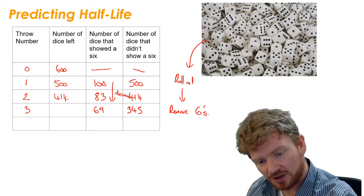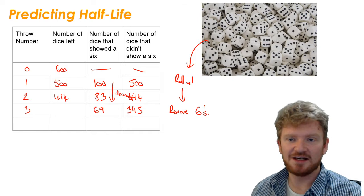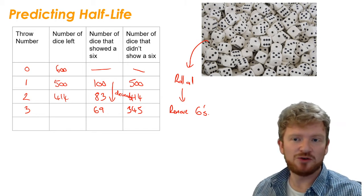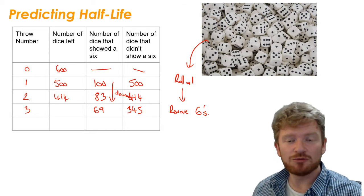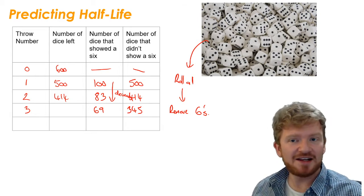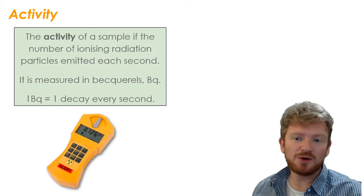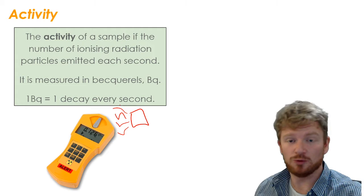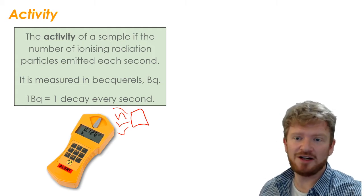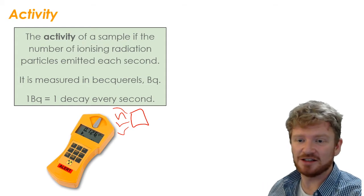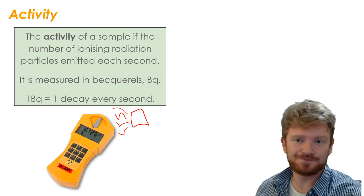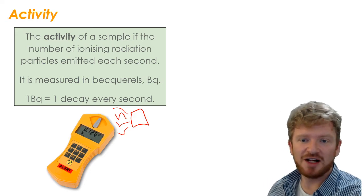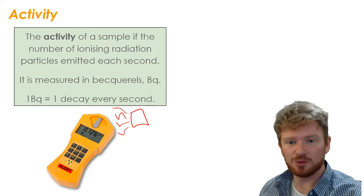What you can see is that as time goes on, this number decreases. I have less dice decaying each second. Now for an individual dice, I can't predict whether it will be a 1, 2, 3, 4, 5, or 6. But I can say that roughly every throw a sixth of them decays. And it's the same with radiation. If I have a radioactive sample, it's going to be giving off alpha, beta, or gamma, or a combination of all three. And I can detect that with a radiation detector, usually called a Geiger counter. And that gives me an activity. The activity of a sample is the number of ionizing radiation particles it emits every second, and is measured in becquerels. One becquerel means one decay every second.